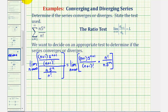Before we multiply, we want to simplify. Let's first look at five to the power of n plus one and five to the power of n. Five to the power of n plus one has one more factor of five than five to the n. So this simplifies to one factor of five.